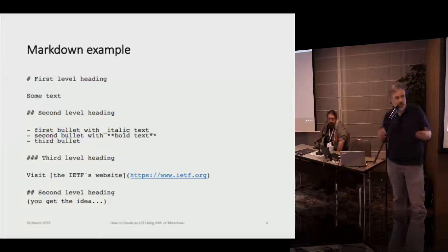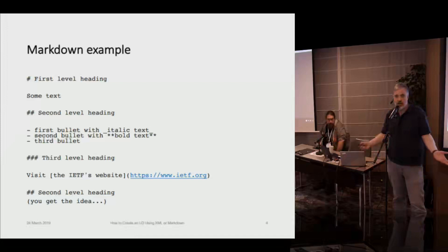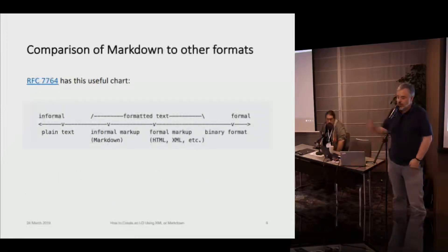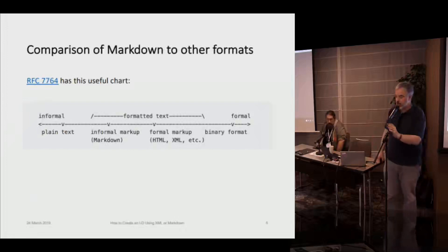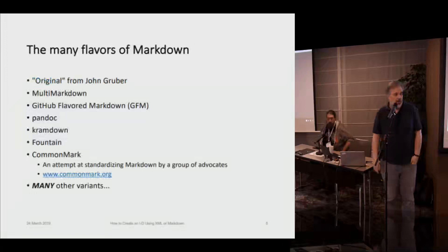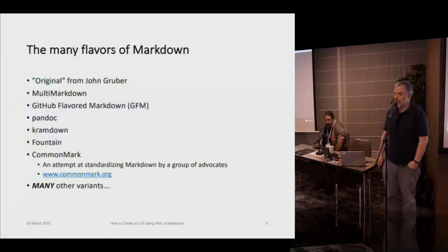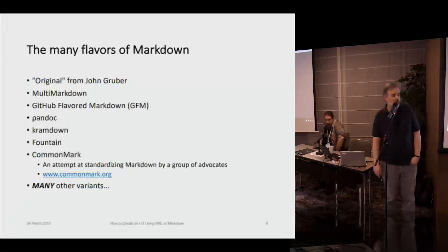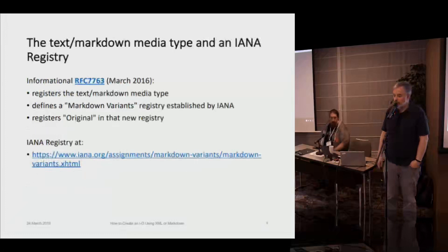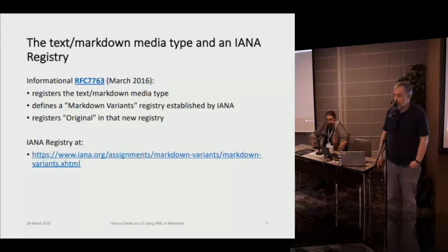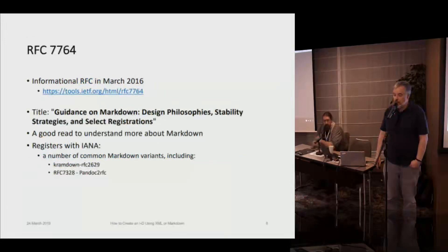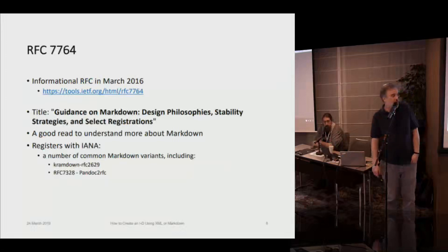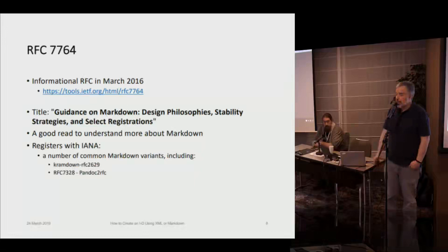Markdown looks something like this: using the number sign — hashtag, octothorpe — for headings; dashes or bullets for lists; and square brackets around the target text with parentheses around the URL for links. It's a very simple format. RFC 7764, about using Markdown and design guidelines, has a nice chart showing where Markdown fits in the formatting landscape. There are many different flavors — John Gruber did not want Markdown standardized, and as a result there are a lot of different flavors out there. There is now an IANA registry for Markdown variants. RFC 7764 provides good background about what it is, what the tools are.